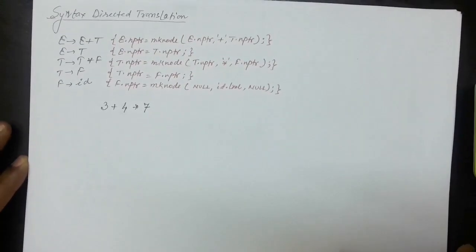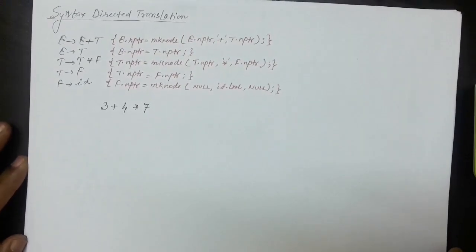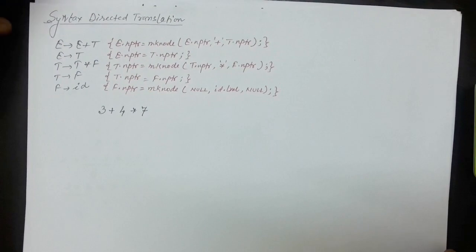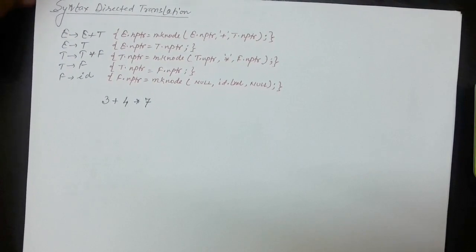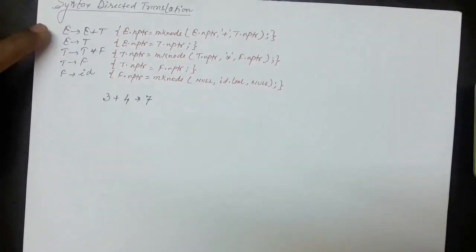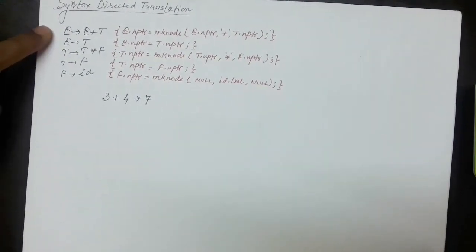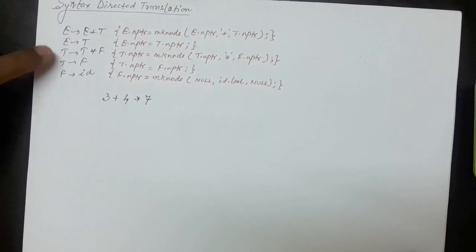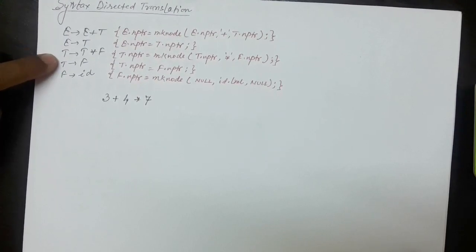Hello everyone. In this lecture we will take more examples on syntax directed translation. To start with, let's take this grammar: e produces e plus t, e produces t, t produces t star f, t produces f, and f produces id.